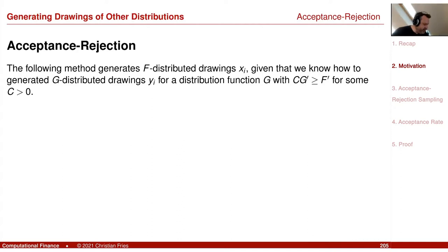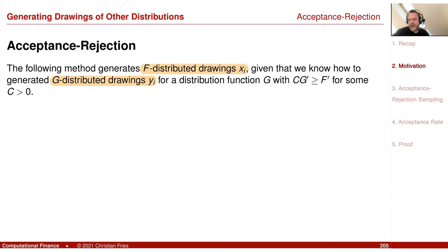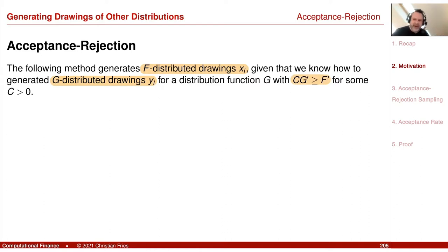The following method generates an F-distributed drawing XI, given that we know — and this sounds a little bit strange — a G-distributed drawing YI. And we have some means to check a condition, namely that the density G-prime (the derivative of the distribution function is the density), multiplied with a constant, is larger than the density of the F-distributed random variable — so F-prime, for some constant C.